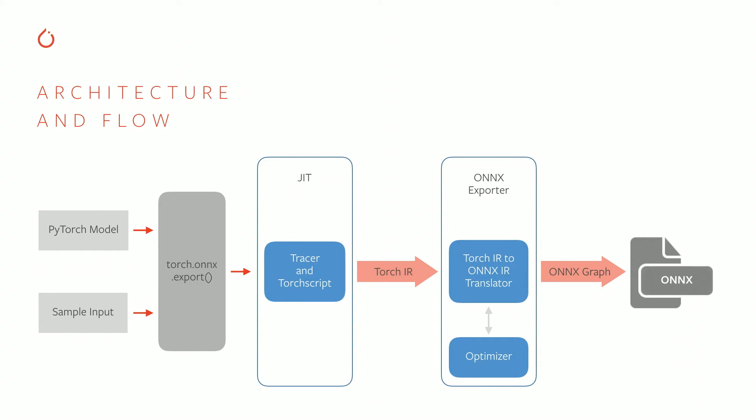The first step is fully orchestrated by the JIT tracer. In this step, we JIT trace the model with the sample input. The second step is downstream from the existing JIT compiler.